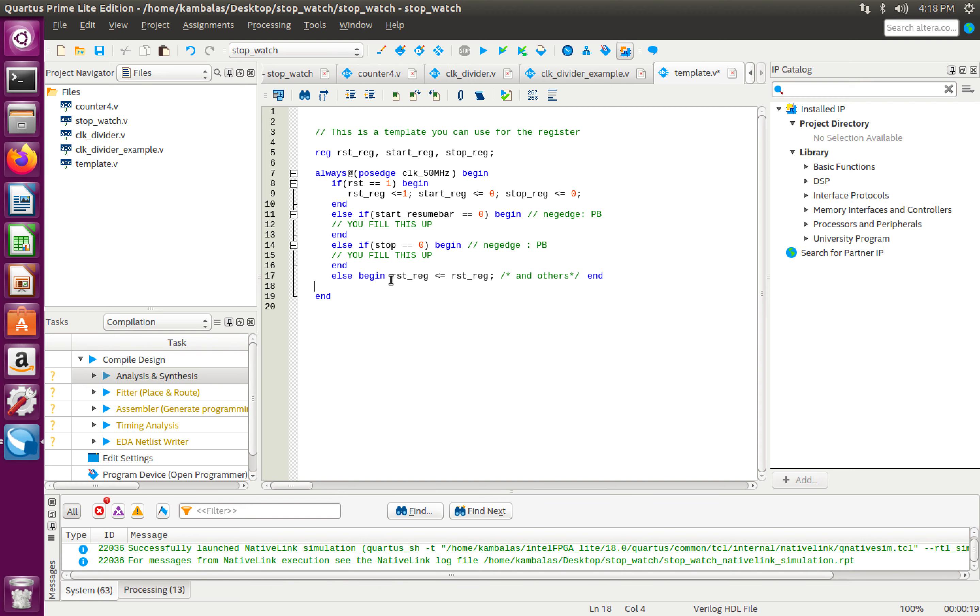What happens in this else statement is the value of my reset register is remembered. Not only my reset register. In this case, you need to put your reset register, stop and start in whatever other register. The reason being, let us say that there is no positive edge of clock anymore. If there was no positive edge, then this if, this if and this if, all these three if cases will fail.